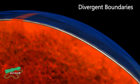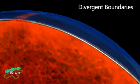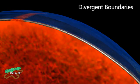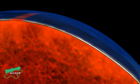When plates move apart, you have a divergent boundary. Magma from the mantle wells up, creating new oceanic crust.